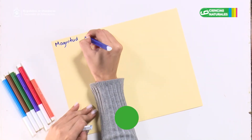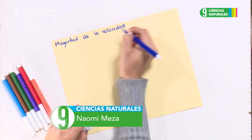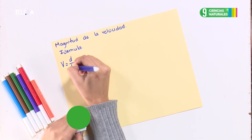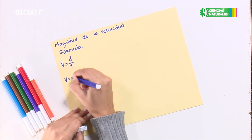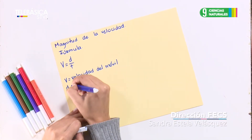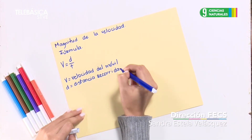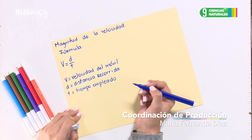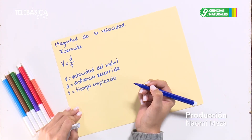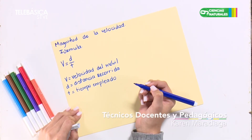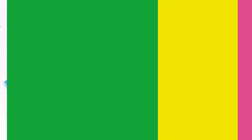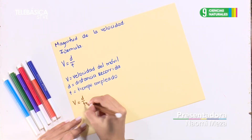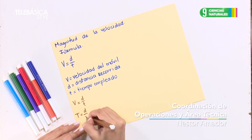Se puede calcular la magnitud de la velocidad utilizando la siguiente expresión: V es igual a D sobre T, donde V será la velocidad del móvil, D la distancia recorrida por el móvil y T el tiempo empleado por el móvil para realizar el movimiento. Para resolver problemas de distancia, es necesario despejar la ecuación de velocidad, sustituyendo e intercambiando el tiempo por la velocidad.